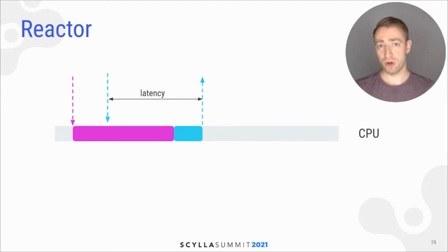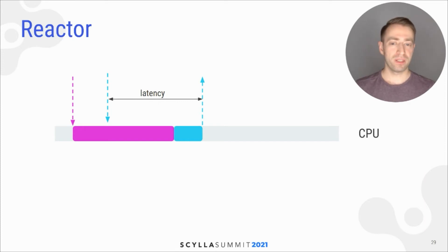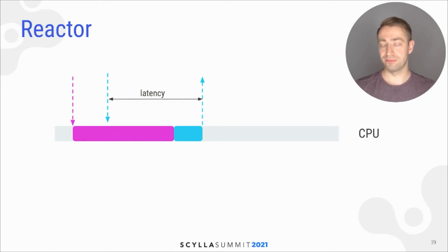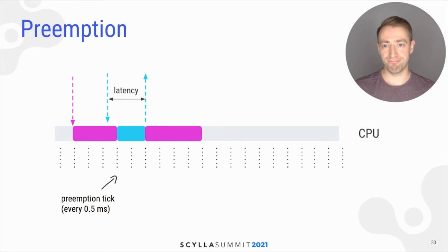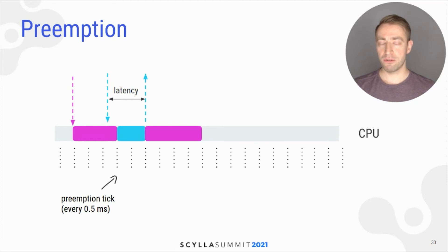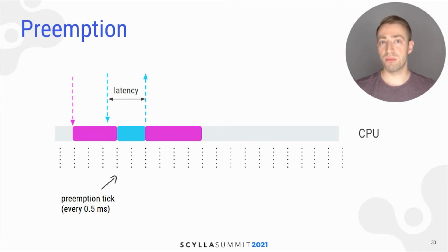However, when there is a background workload running — for example, memtable flush or SS table compaction — which occupies the CPU, when your request arrives it has to wait until that task yields the CPU. This will increase the perceived latency. That's why we have a preemption tick every half a millisecond which tells the task to yield the CPU, so latency will be bounded.